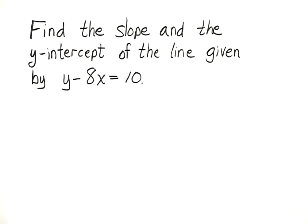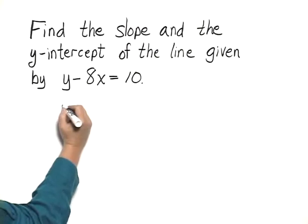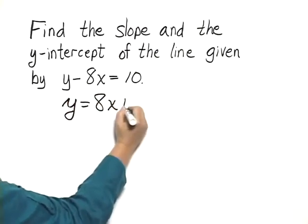Find the slope and the y-intercept of the line given by y minus 8x equals 10. If we solve for y by adding 8x to both sides, we have y equals 8x plus 10.